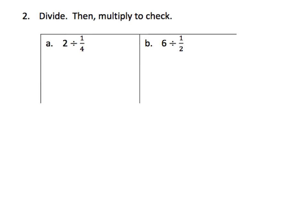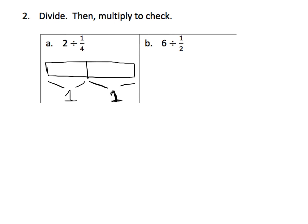So let's begin with problem A. It says 2 divided by 1 fourth. I'm going to draw a tape diagram to represent 2 — here is 1 whole and here is 1 whole. And then it says how many fourths are in 2? Well, we know that there are 4 fourths in one whole, and 4 fourths in another whole. So a simple way to get that is 2 times 4, which gives us 8. So 2 divided by 1 fourth equals 8.